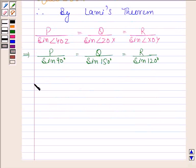Now, this implies P by 1 is equal to Q by one-half equals R by root 3 by 2.